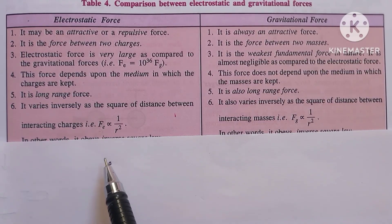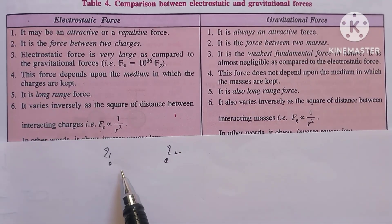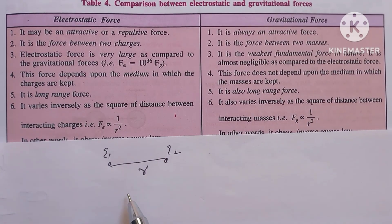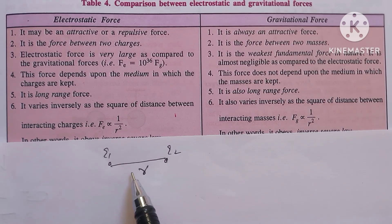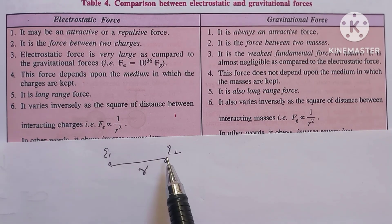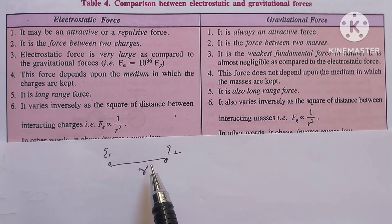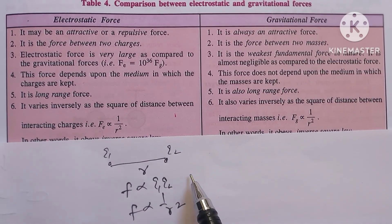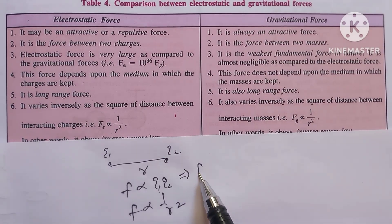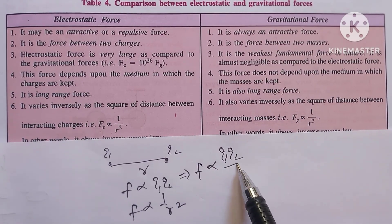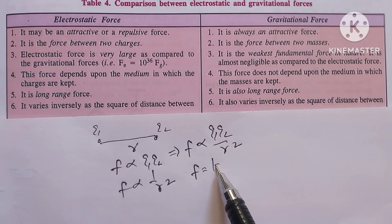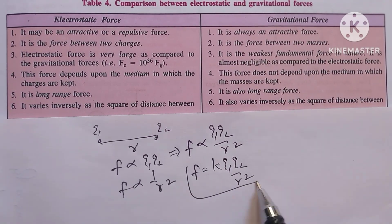Let us take two charges Q1 and Q2, and let us suppose the distance between these two charges is R. Then according to Coulomb, the force of attraction or repulsion, depending on the nature of the charges, is directly proportional to the product of charges and inversely proportional to the square of the distance between them. This implies F is proportional to Q1 times Q2 over R squared. To remove this constant of proportionality, we take a constant K, where K is known as the Coulomb constant.